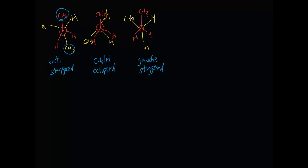If I turn it again, leaving the front carbon stationary and turning again 60 degrees, what you'll get is an eclipsed conformation — it should be CH3 here. It's tough to draw because this methyl group is actually eclipsing this methyl group up here, which is why this Newman projection is going to be called methyl-methyl eclipsed.